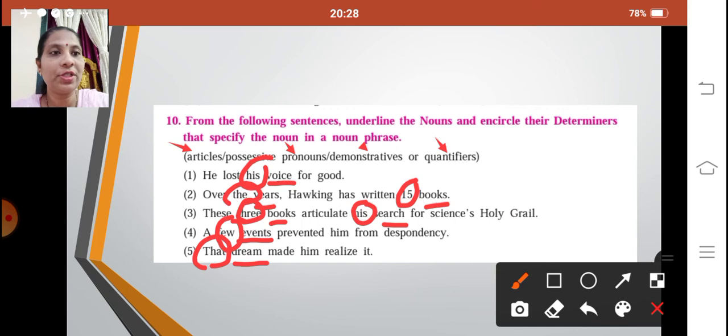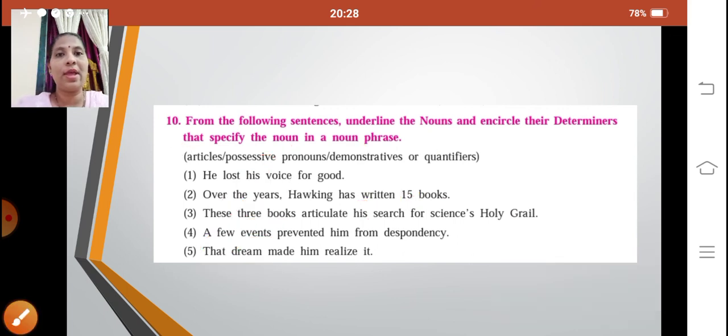I hope you understood this, children. How to find out the determiners. You will always have the determiners before a noun in the sentence. So it can be articles, it can be possessive pronouns, demonstratives, or quantifiers as well.